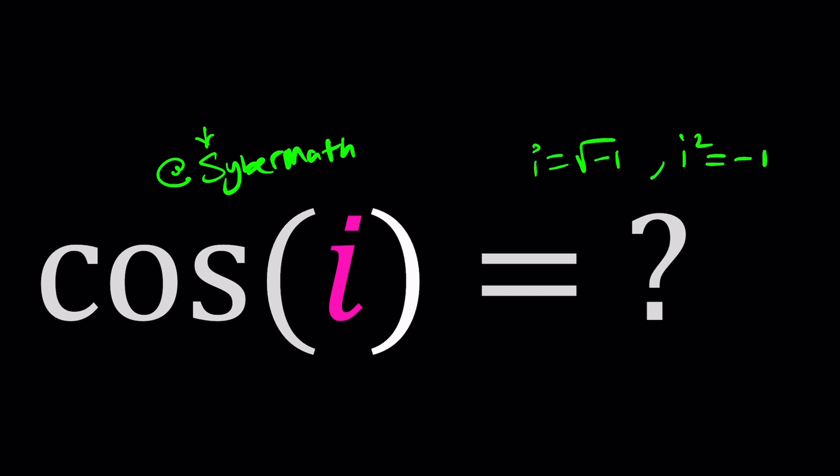But you can't say cosister problem. It's probably not going to make sense, right? But anyways, here we are trying to find cosine of i. All right, let's get to it.